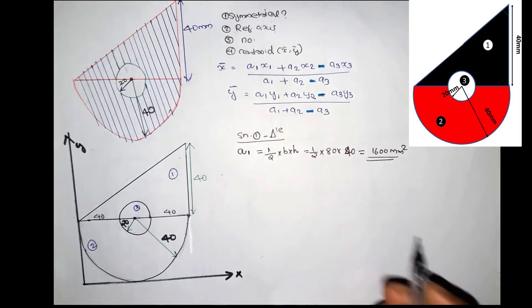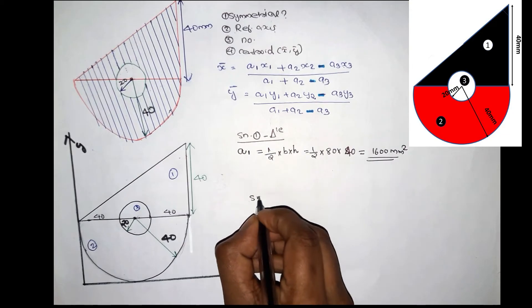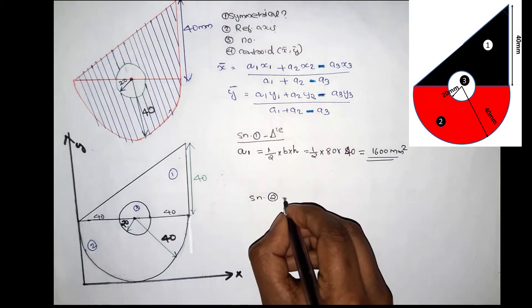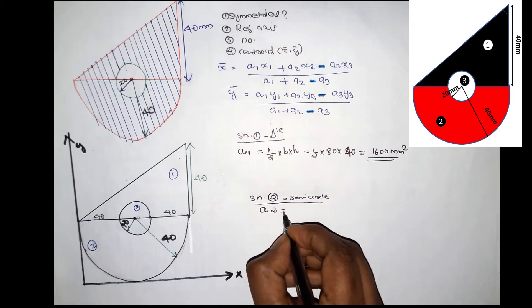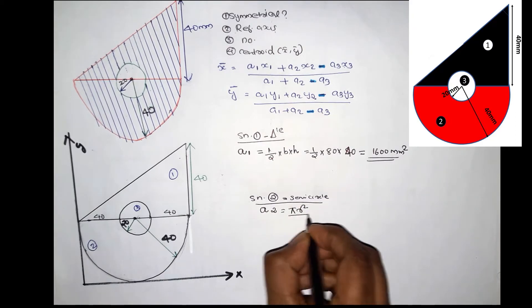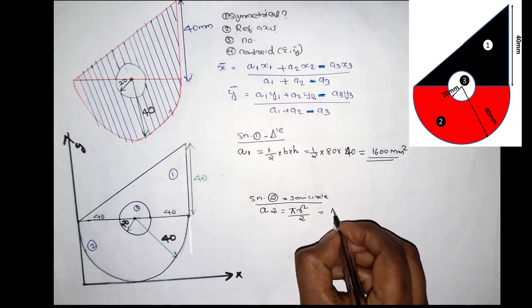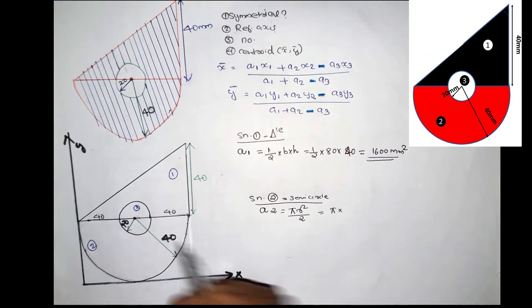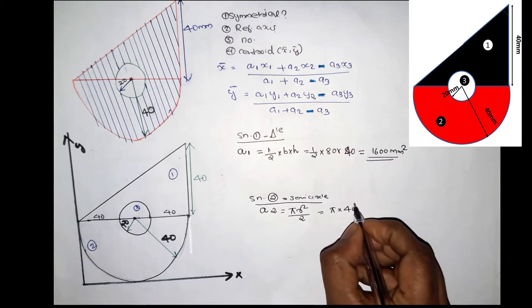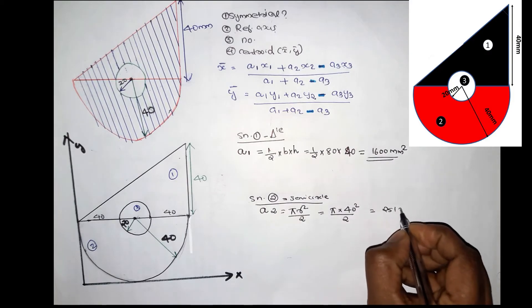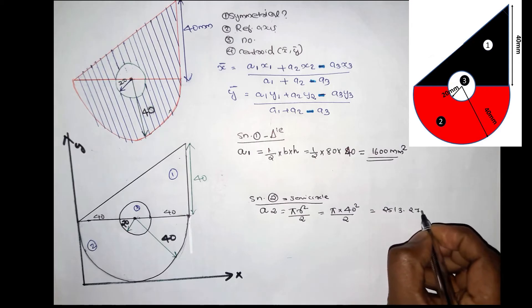A2 is the semicircle. The area of a semicircle is (π/2)·r². The semicircle radius is 40. The area is 2513.27 mm².